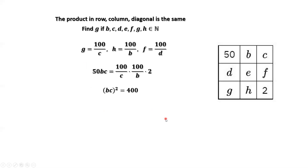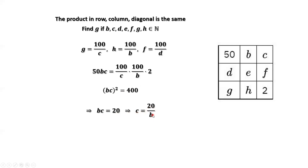Then we have BC squared equals 400. This implies BC equals 20. Therefore, C equals 20 over B. C is now in terms of B.